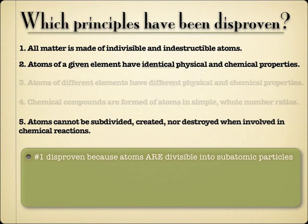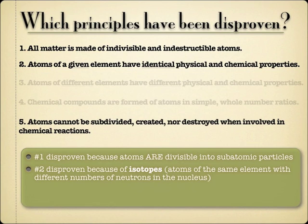We know that atoms are divisible into subatomic particles — protons, neutrons, electrons, and even particles smaller than that. You've grown up knowing that, but they didn't know that at the time. Number two sounds like an easy bet — the idea that atoms of the same element are the same — but through the discovery of isotopes, which we'll talk more about later in this unit, atoms of the same element can actually be a little different because they have different numbers of neutrons in the nucleus. You can't really fault Dalton too much for this; he didn't even know about the divisible atom, much less the idea of neutrons in the nucleus or that there could be different numbers of neutrons. So we can certainly forgive him of that.